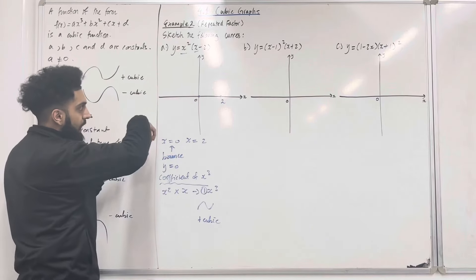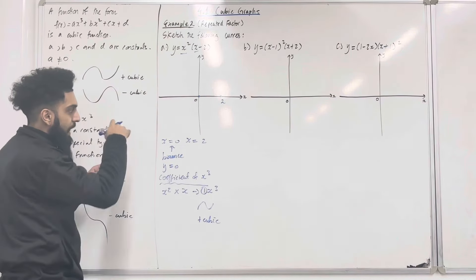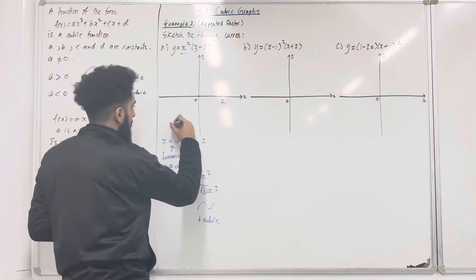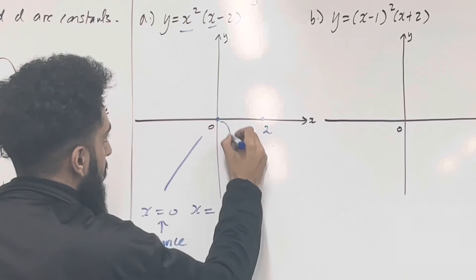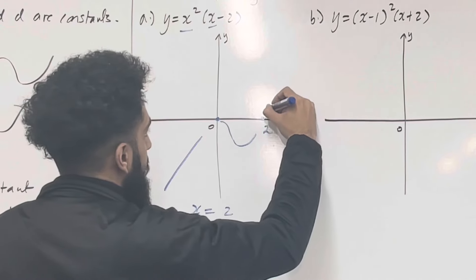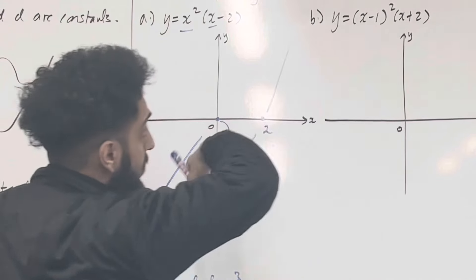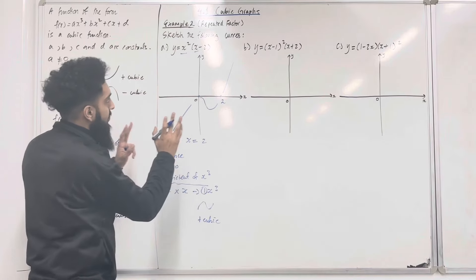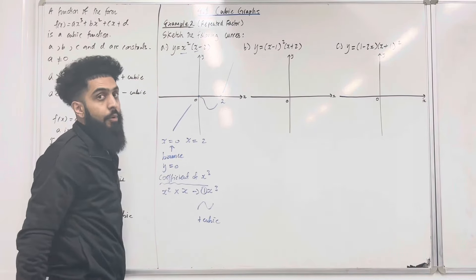When sketching, I need to make sure the curve bounces at x equals 0. So the curve goes up, bounces at x equals 0, then goes back up to x equal 2 and continues to positive infinity. That there represents the curve y equal x squared (x minus 2).